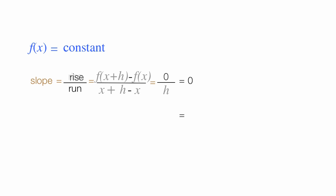Again, the rise is equal to zero. So there you have it. The derivative of a constant is equal to zero.